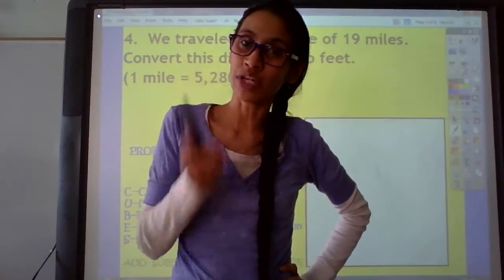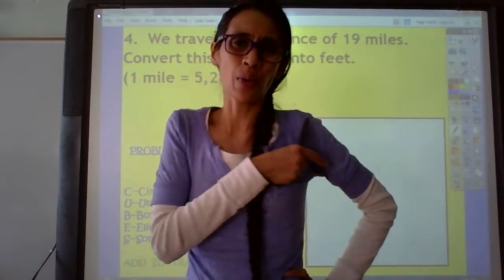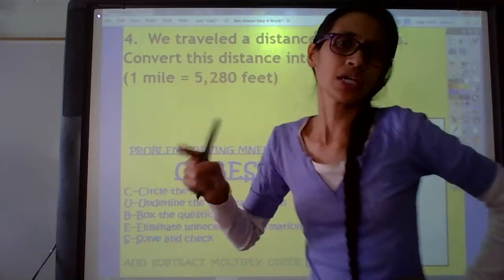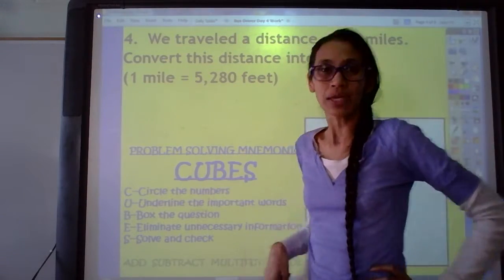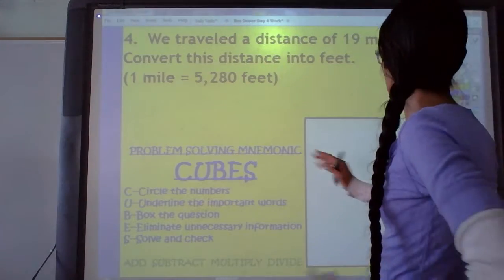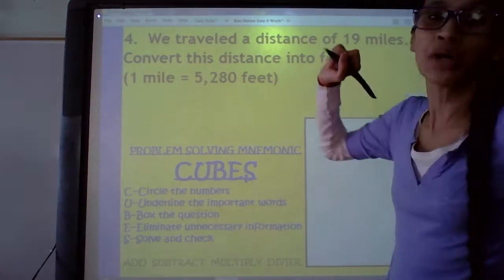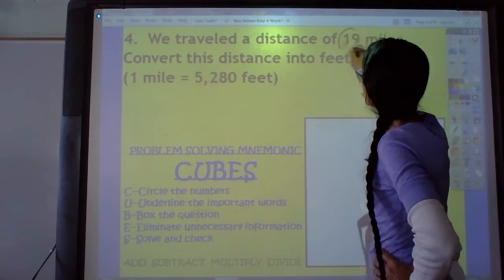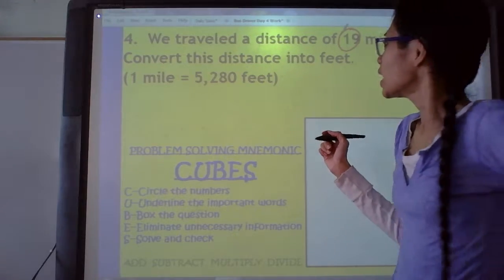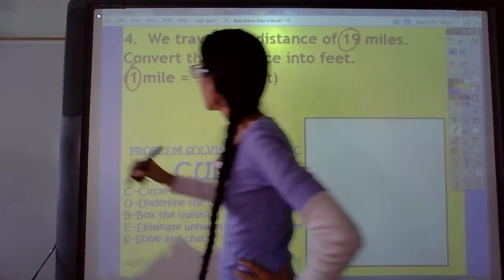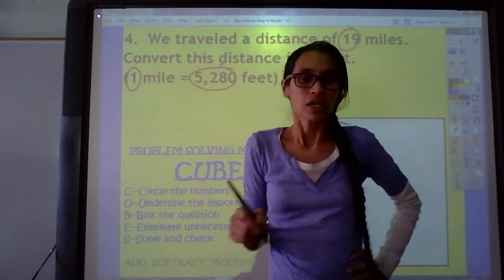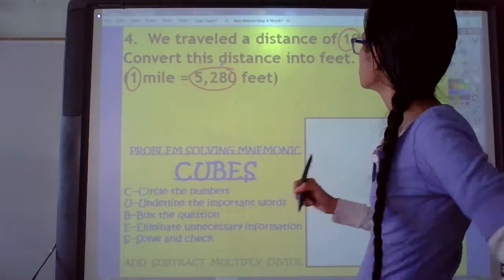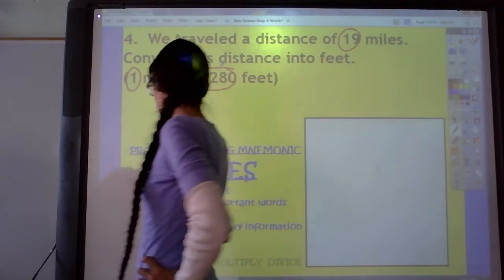So to solve this problem, we can use our clues, our problem solving cubes. And the first step is the C step. And it says to do what? Circle the numbers. So help me find some numbers. What do you see? 19. What else do you see? I see the number one. And what else do you see? 5,280. Did we find all the numbers? Yep! We're done with that step.